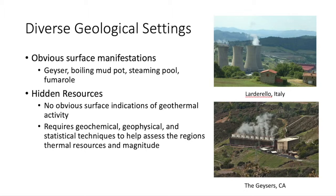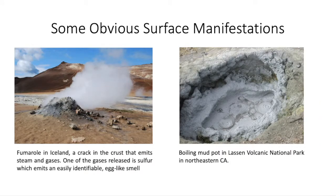We're going to talk about the different types of geological settings used to identify geothermal resources. While some geothermal sources produce obvious surface manifestations, such as geysers, boiling mud pots, steaming pools, and fumaroles, others leave no physical mark on the surface and they're called hidden resources, where they require more in-depth studying, such as geochemical, geophysical, and statistical techniques to help assess the region's thermal resources.